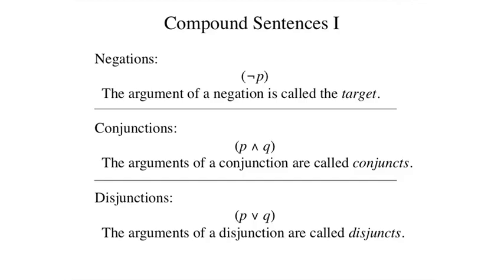A conjunction is a sequence of sentences separated by occurrences of the AND operator and enclosed in parentheses. For example, we can form the conjunction of P and Q as shown here in the middle.